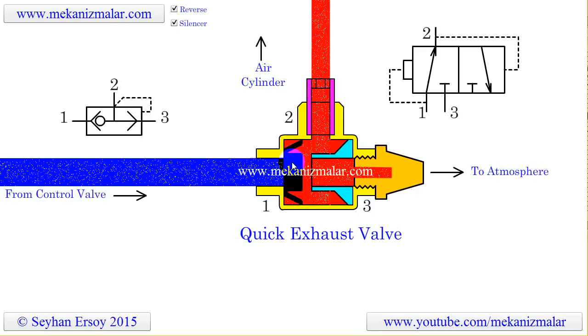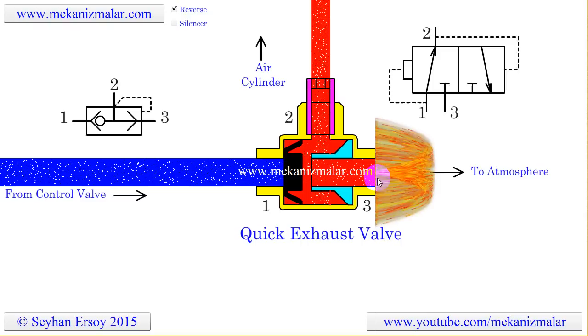In quick exhaust valves, silencers are usually used to reduce the noise. Omission of the silencer causes air to be discharged quickly to the environment with a loud whooshing sound.